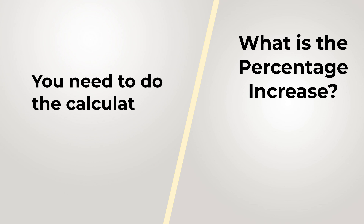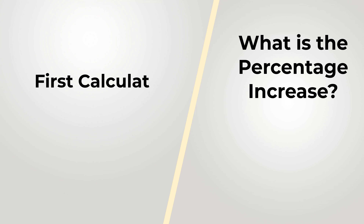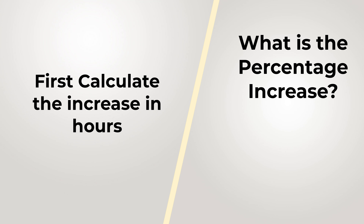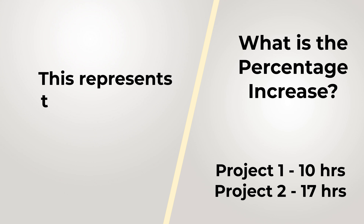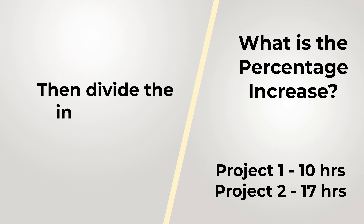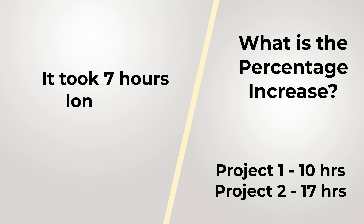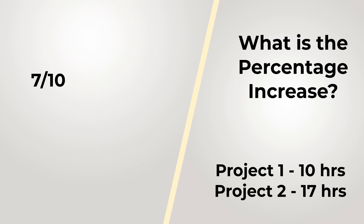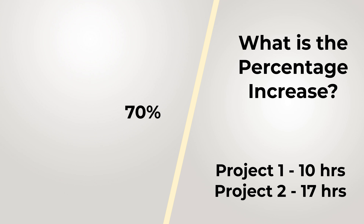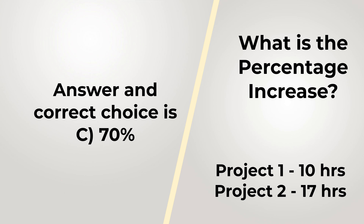To calculate percentage increase, first determine the increase in hours: 17 minus 10 equals 7 hours. Next, divide the increase by the original hours: 7 divided by 10. Finally, multiply by 100%. The result is 70%. So the correct answer is choice C — the increase was 70%.